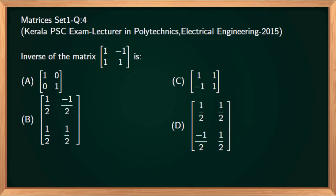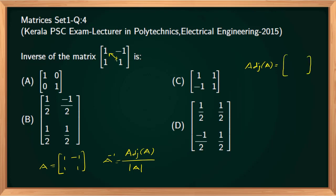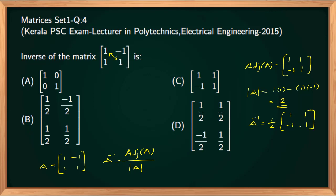Next question: find the inverse of the 2×2 matrix [1, −1; 1, 1]. Denote this matrix as A. Then A inverse equals adjoint of A divided by determinant of A. The adjoint of a 2×2 matrix is obtained by swapping the principal diagonal values and changing the sign of the off-diagonal elements, giving [1, 1; −1, 1]. Determinant of A equals 1×1 minus (−1×1) equals 2. Therefore A inverse equals (1/2)[1, 1; −1, 1]. Correct option is option D.